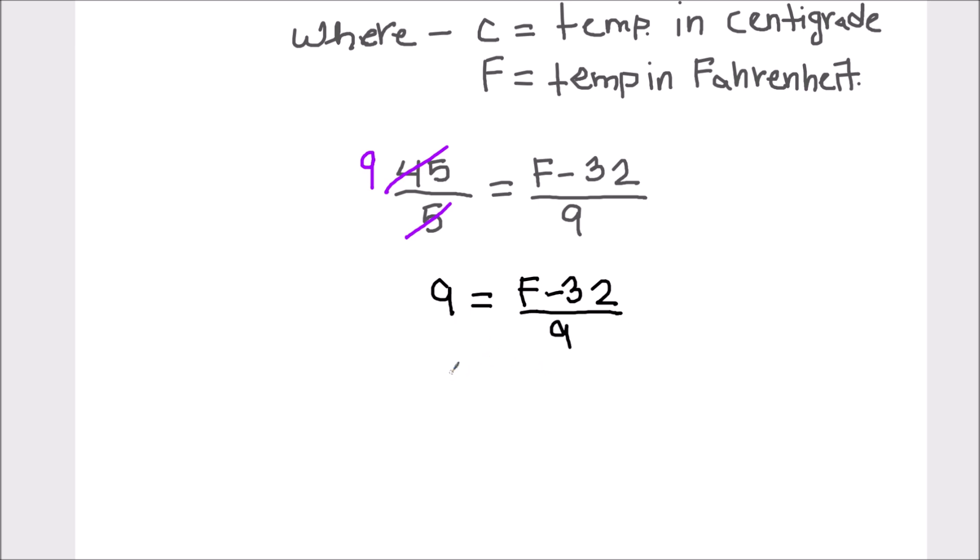After cross multiplying we will have 9 times 9 equals F minus 32. 9 times 9 is 81, so 81 equals F minus 32 or F equals 81 plus 32.